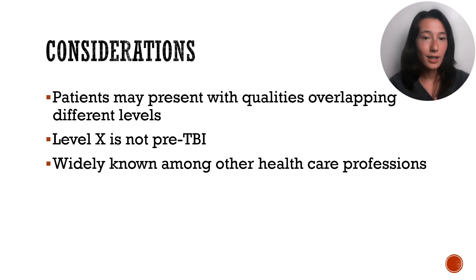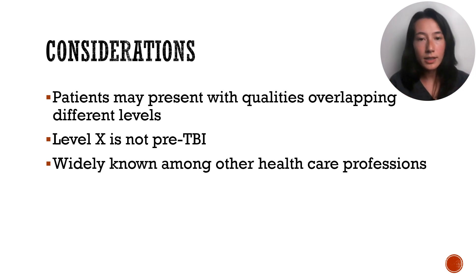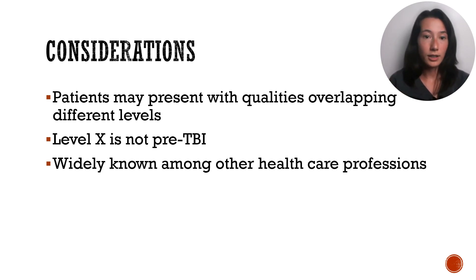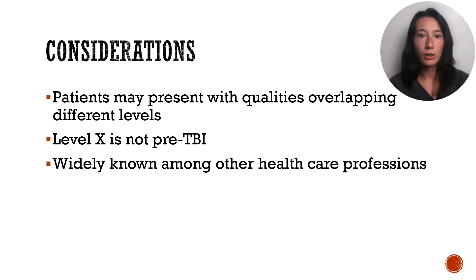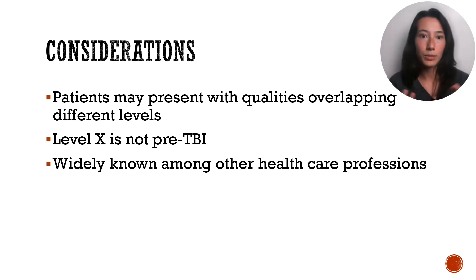Here are some considerations. As you look into each level, keep in mind that a person might present with qualities from different sections. Realistically, a person labeled Rancho Level 7 may not only have traits from that level — there could be traits stemming from Level 8 or Level 6. Additionally, Level 10 does not suggest that a person is back to how they were before the TBI; they still might need extra time or assistive devices to perform their tasks. The Rancho Los Amigos Scale is widely used not only within physical therapy, but other healthcare professions as well — doctors, nurses, occupational therapists, etc. — making it a very useful tool to know for your boards and for interprofessional communication.